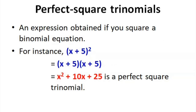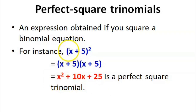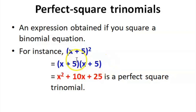Let's define first what is a perfect square trinomial. A perfect square trinomial is an expression obtained if you square a binomial equation. For example, we have the binomial quantity (x + 5) squared. If we expand this one, the result is a perfect square trinomial. This is the same as quantity (x + 5) times quantity (x + 5) — you're just multiplying x + 5 twice — and the result of expanding this is a perfect square trinomial.